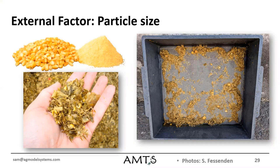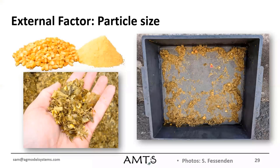The external factor influencing starch digestibility is particle size. There's a big difference between whole corn and ground corn, which translates right through the animal. On the left, a handful of corn silage called 'processed' because there were no whole kernels — but you can pick out partial kernels throughout. When you look at washed manure from those cows, you can still pick out pieces of corn. When we talk about processed corn silage we really want to obliterate those kernels as best we can, otherwise we're seeing lost opportunity in the manure and potential health challenges.